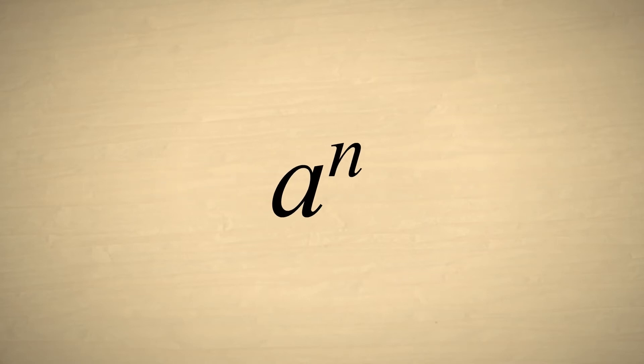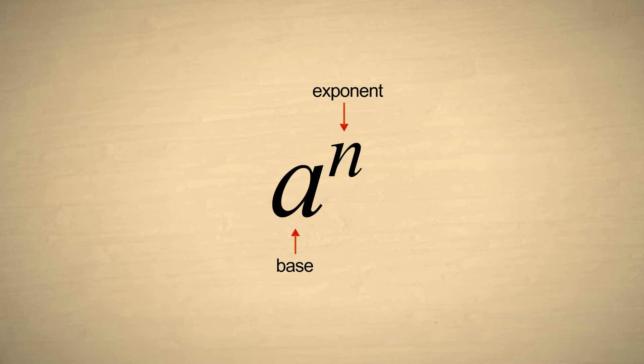To write a raised to the nth power, we write the number a — which is called the base — with a small superscript n, which is called the exponent. This forms an exponential expression.